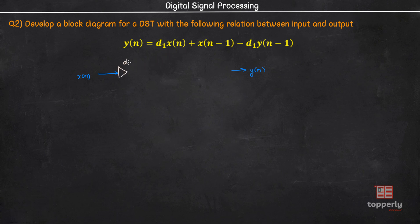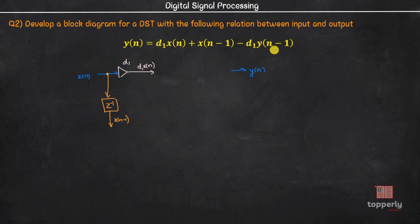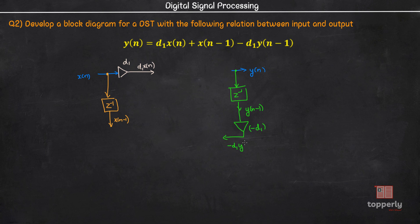We will add a multiplier with scalar d1 and the output will be d1 times x of n. The next term is x of n-1, so we need a unit delay. We take a pick-off node from here and feed it into a unit delay, so the output will be x of n-1. The last term is minus d1 times y of n-1. For this we will need a unit delay on the y of n path, giving y of n-1, and then a multiplier with scalar minus d1, giving the output minus d1 times y of n-1.